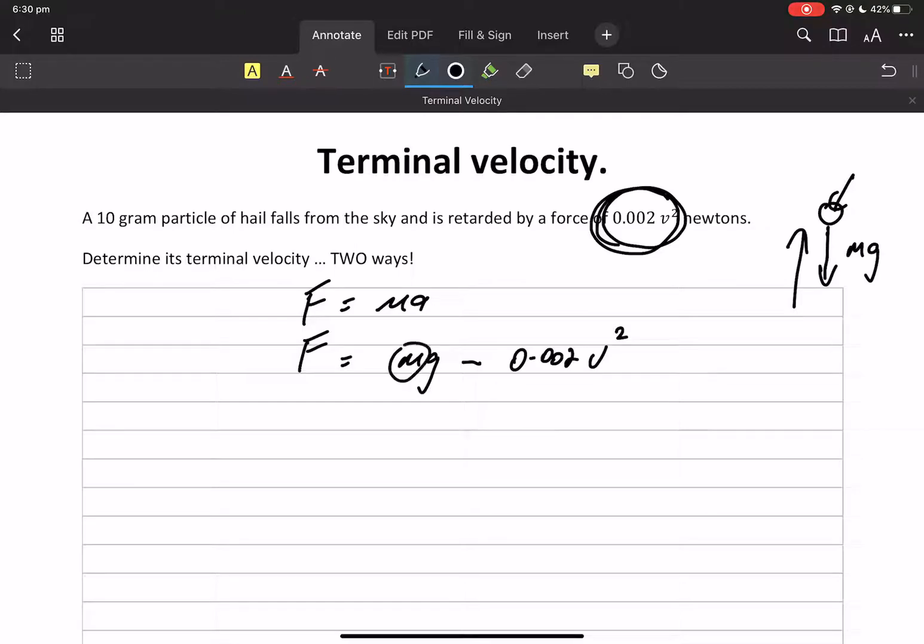Now that mass is 10 grams, so 0.01. There we go. And force equals mass by acceleration. So this force on the left hand side is 0.01A. So let's just cut to the chase. A is going to be g because we're dividing by this 0.01, minus 0.2 v squared.